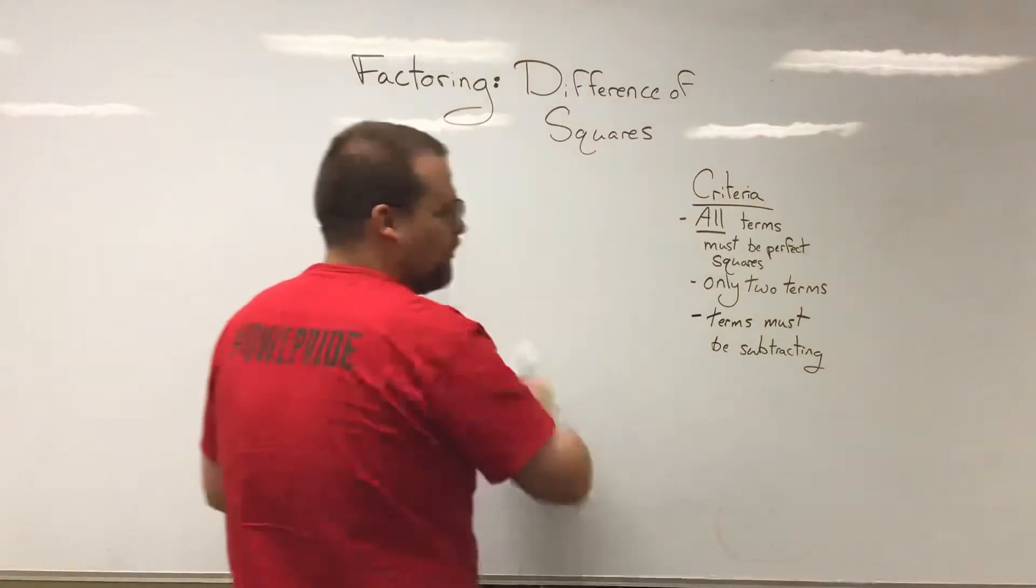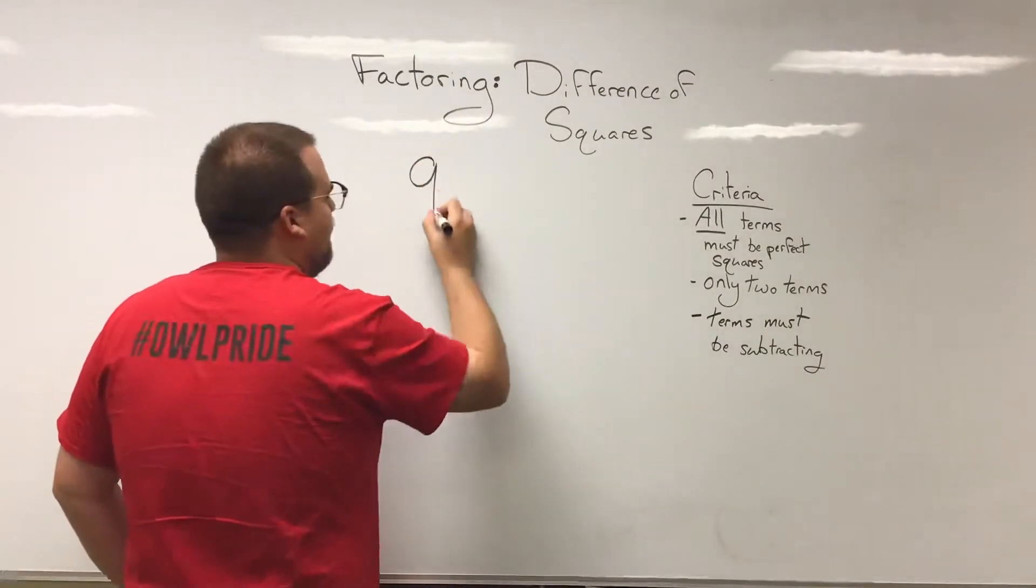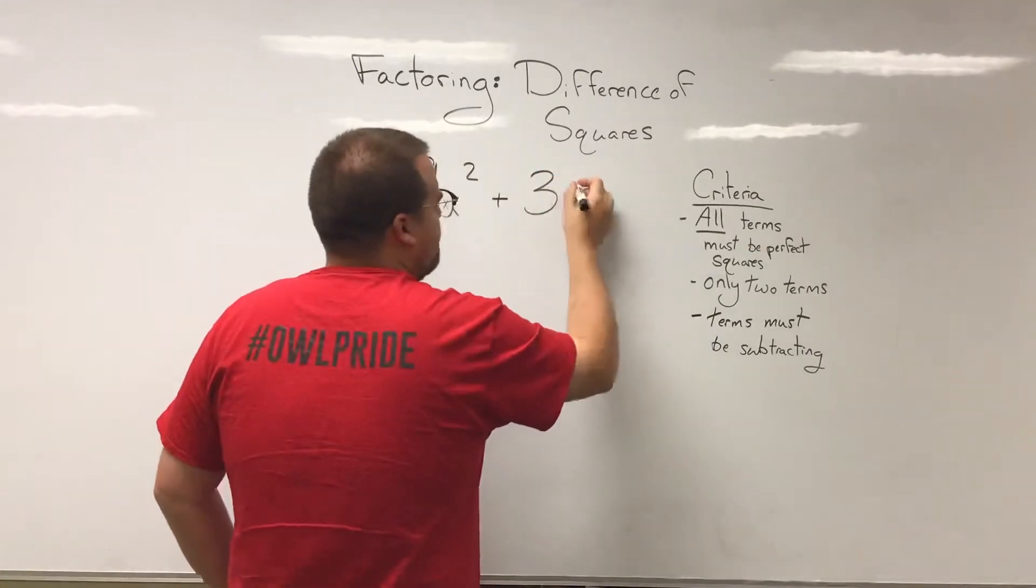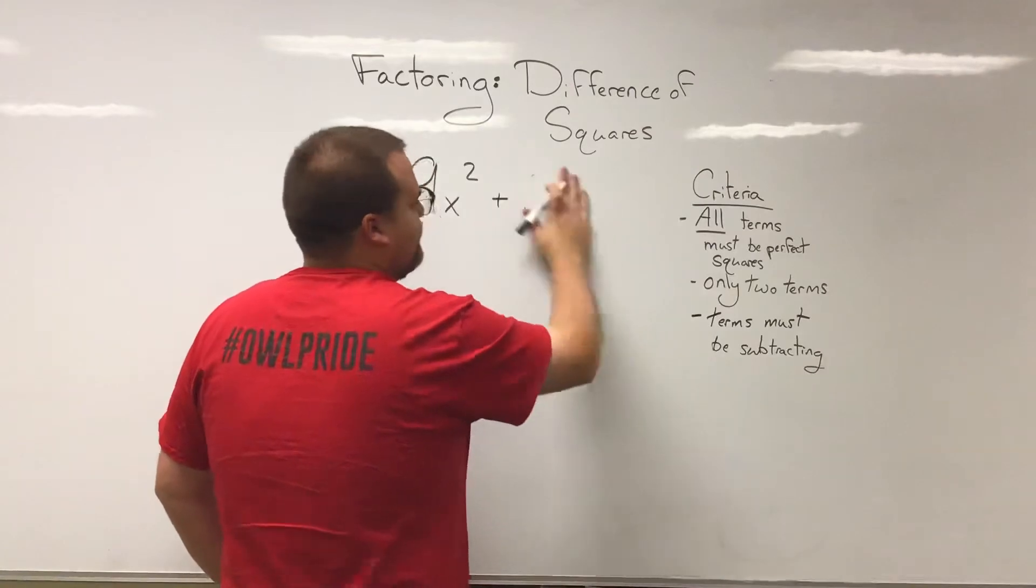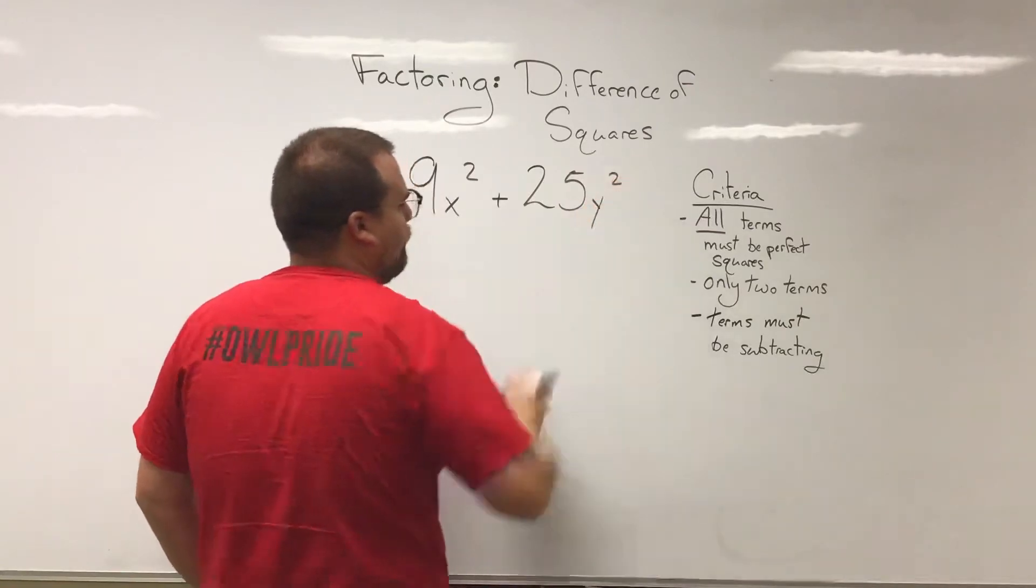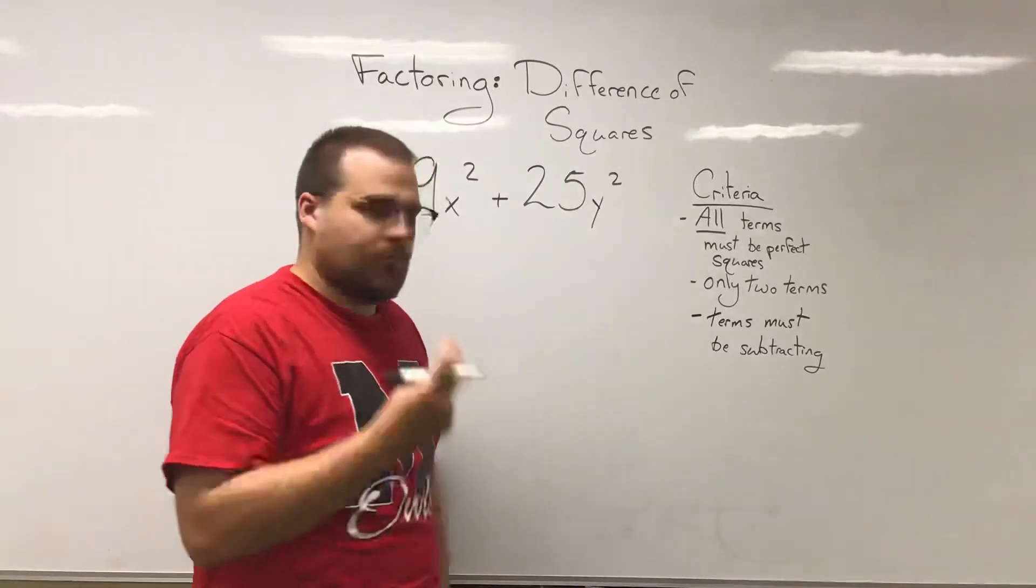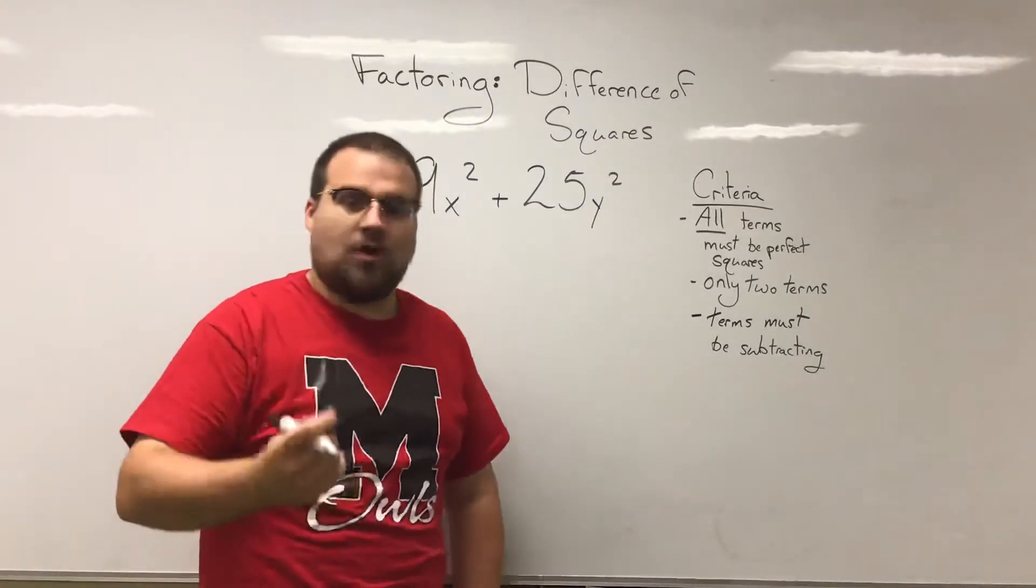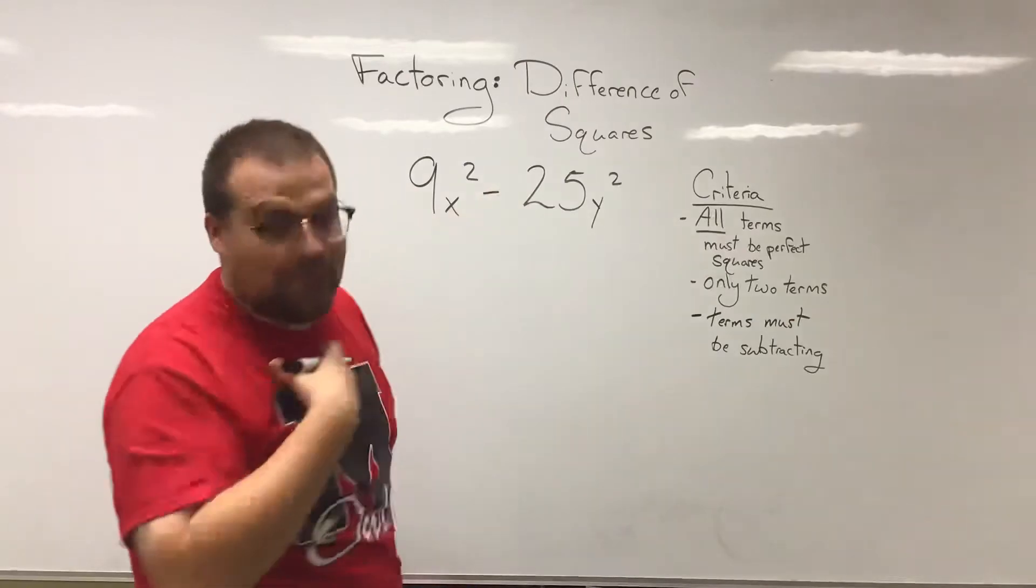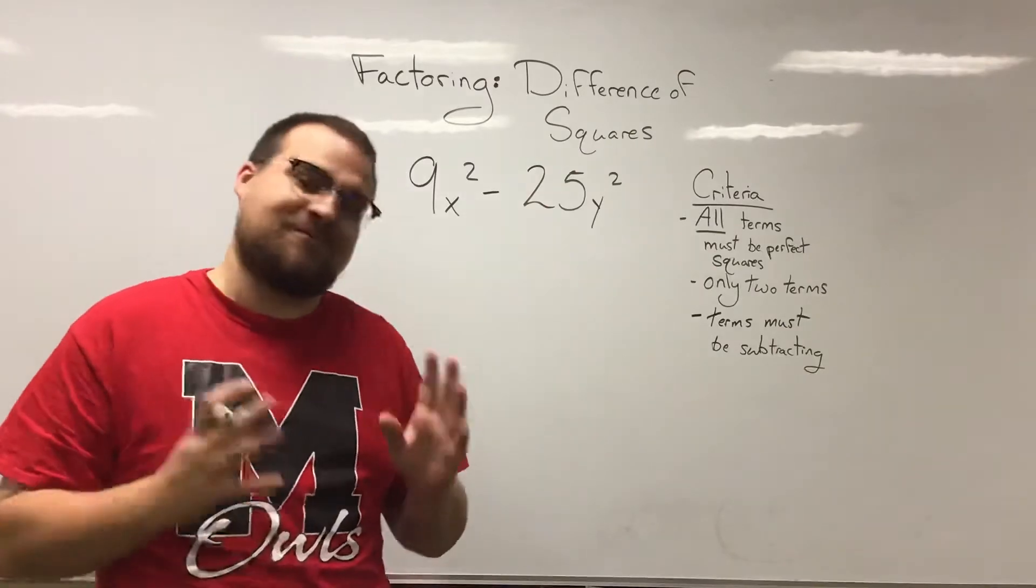And we're going to do two more examples before we end the video here. Let's say we have 9x squared plus 36. And let's not do 36. Let's do 25y squared. So then what we want to do is make sure this fits all our criteria. Do we only have two terms? Absolutely. Are they subtracting? No. I wrote that wrong. My bad. They weren't subtracting. So that means we couldn't have done that if I wouldn't have fixed that mistake in my writing.